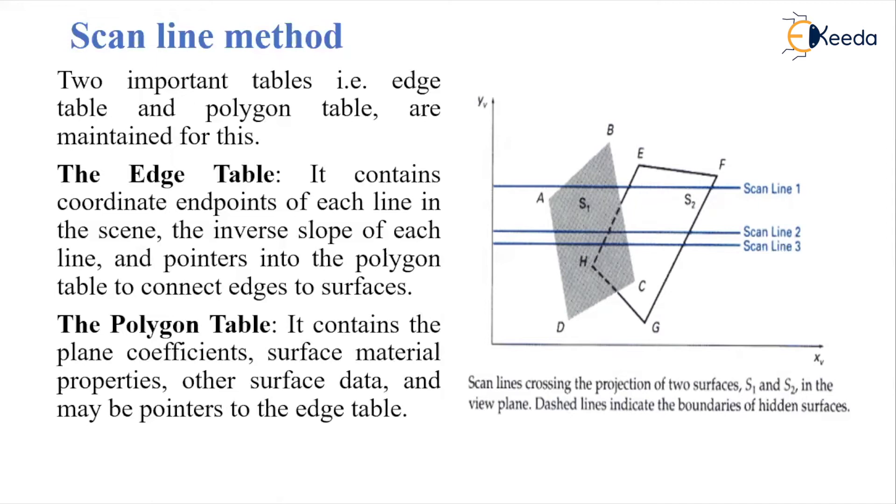The edge table contains the endpoint coordinates of each line, the inverse slope of each line, and pointers into the polygon table which connect the edges to surfaces.